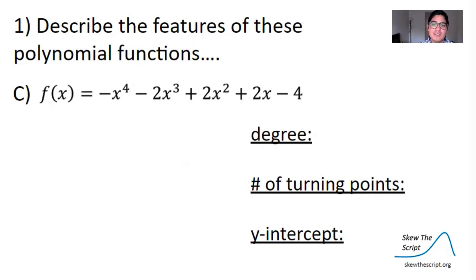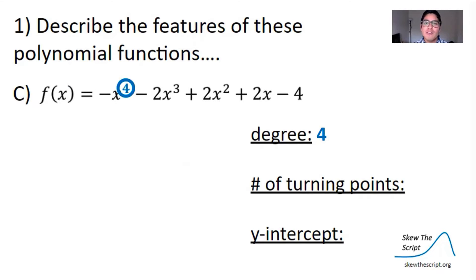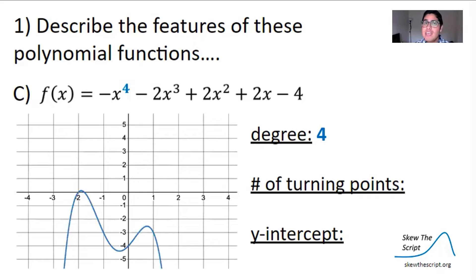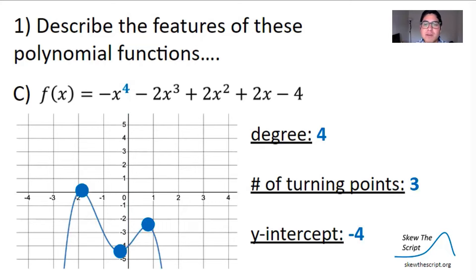There are two more problems in your guided notes — pause the video and try them before checking your answers with me. In 1c, we have a polynomial with degree 4. Using the graph, the y-intercept occurs at negative 4, and the roller coaster shows three direction changes, so three turning points. If the roller coaster image doesn't help, we can also think of turning points as peaks or valleys — anywhere the graph looks like the top of a mountain or the bottom of a valley.